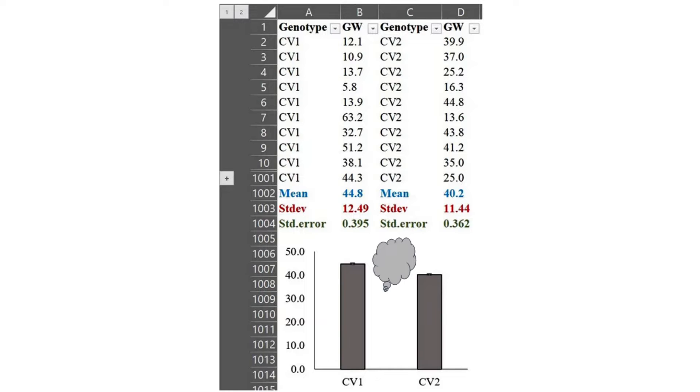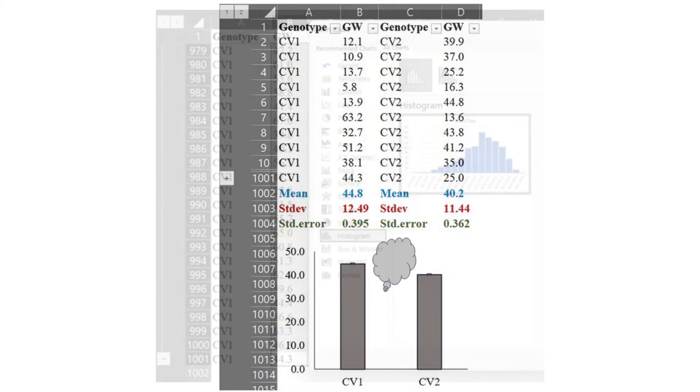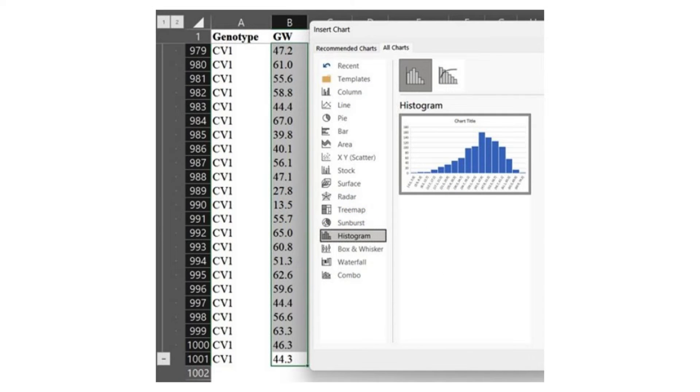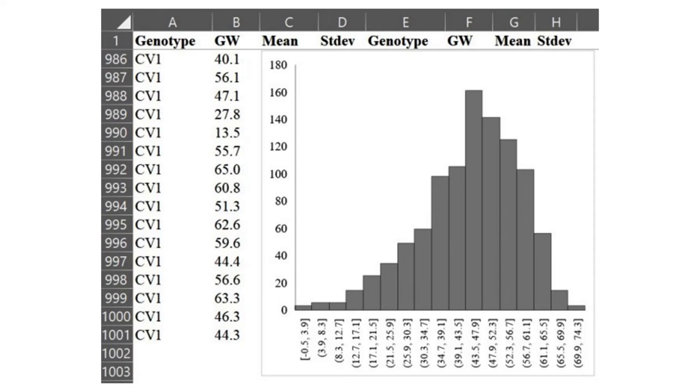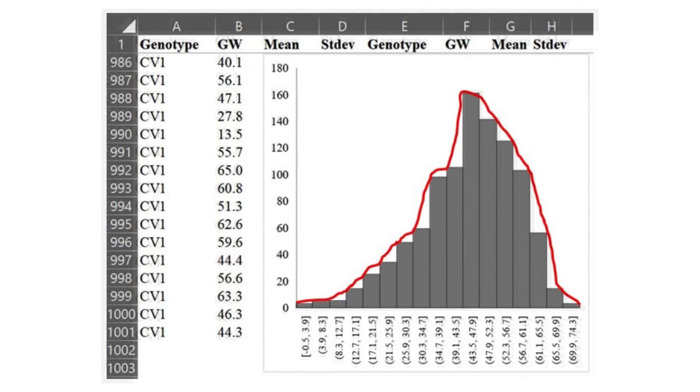First, let's draw a histogram graph. For example, select all grain weight data in column B in Excel and choose histogram. Then we can obtain this graph. If you draw a line to connect each bar, it would be like this.